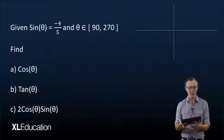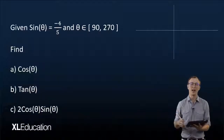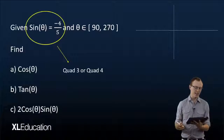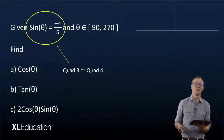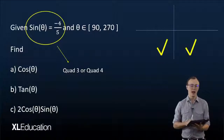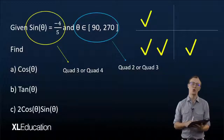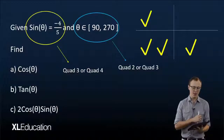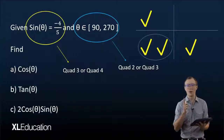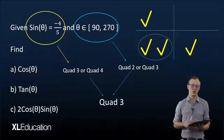We're given sine theta is equal to negative 4 over 5, and theta is an element of (90°, 270°). Sine theta equals a negative number, so that is in quadrant 3 or quadrant 4. Theta is an element of (90°, 270°), so that is in quadrant 2 or quadrant 3. Wherever you get two ticks, you know that is the quadrant you're in — so we are in quadrant 3.